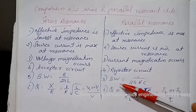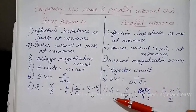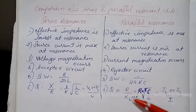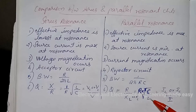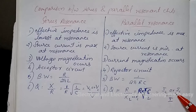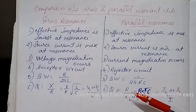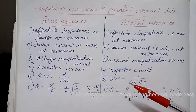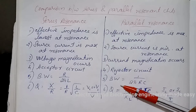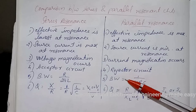In the case of parallel resonance: bandwidth equals 1 by 2·pi·RC, and Q factor equals R by XL or XC, equals R times square root of C by L, equals I_L or I_C divided by I. Thank you for watching the class. If you like the classes, please like, share, and subscribe for more classes on electrical engineering.